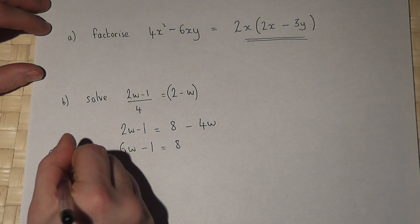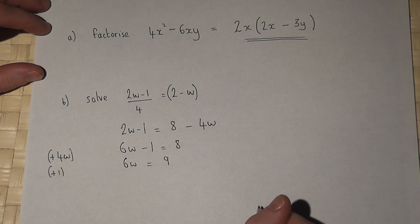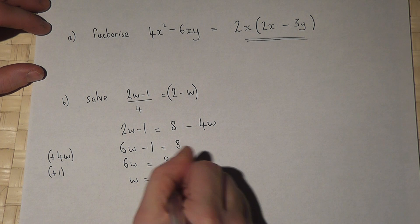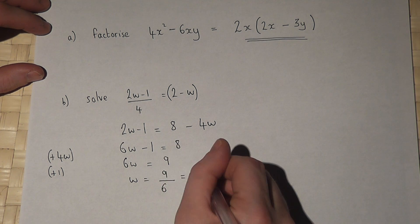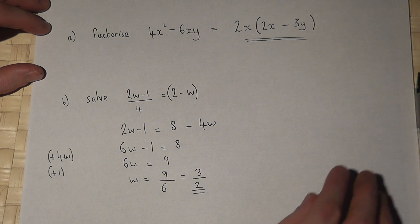I can then add the 1, so 6W equals 9. And to finish off, I divide by 6. So W equals 9 over 6, which if I divide by 3 top and bottom becomes 3 over 2. So W equals 3 over 2.